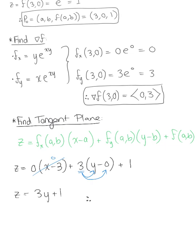And bringing all of our variables to one side we are left with the equation of the tangent plane z minus 3y is equal to 1. And that is our beautiful final answer.